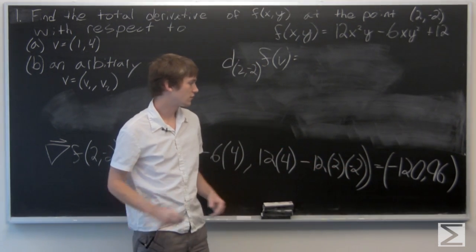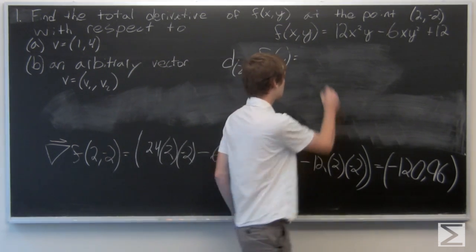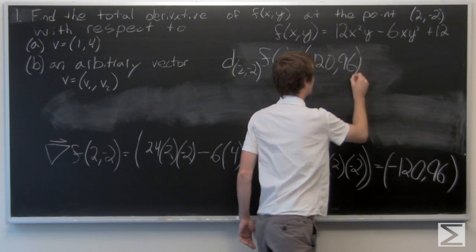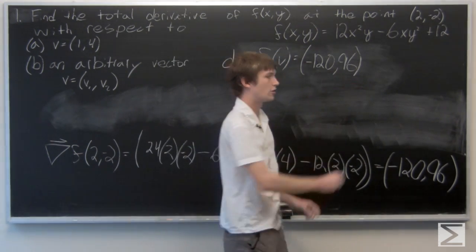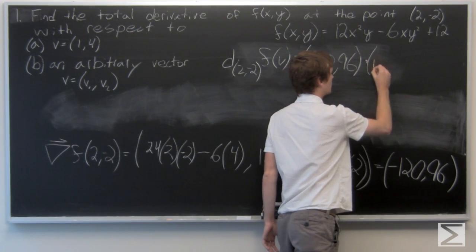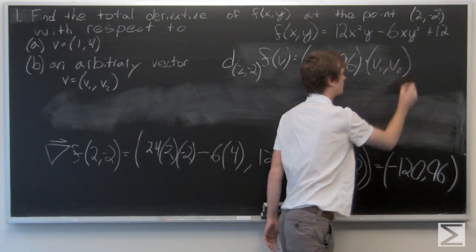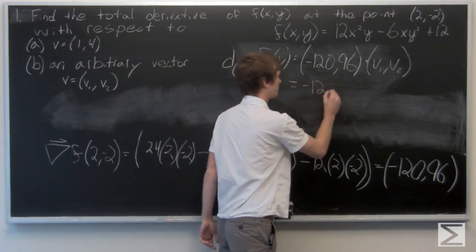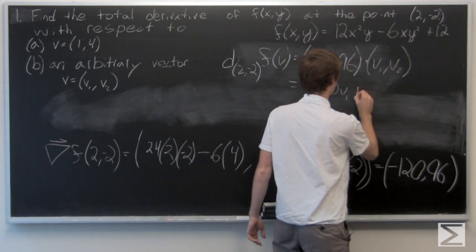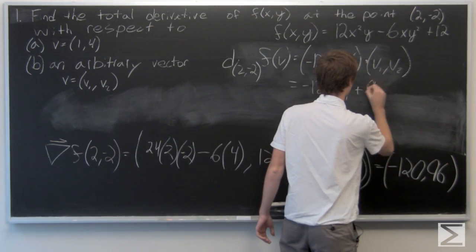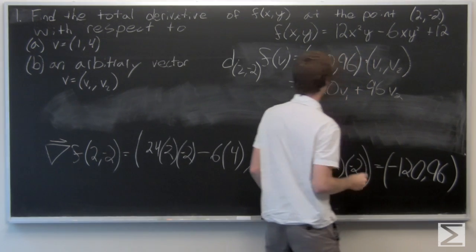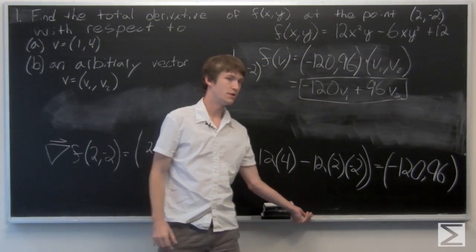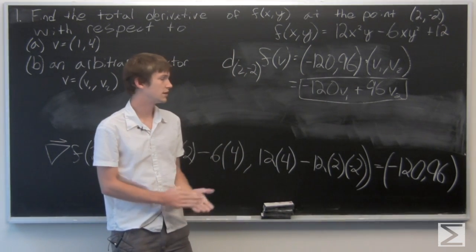We know that the gradient vector at (2, -2) is (-120, 96). For part b, we want to find the total derivative with respect to an arbitrary vector (v1, v2), which is just the dot product. So the answer to part b is -120v1 + 96v2.